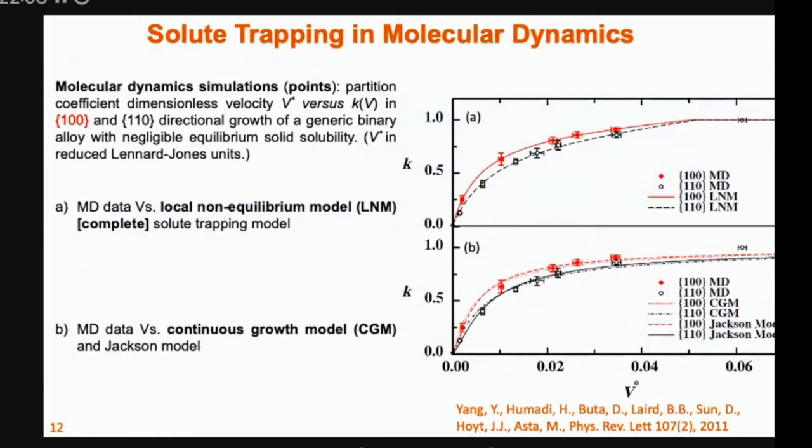The curves on the right, the data on the right is all from MD simulations done by a former student of mine, and Jeff Hoyt, who was at that time at Sandia and then came to McMaster. And the solid curves represent different theories going through the data. So what MD seems to indicate in K here, the y-axis represents again the ratio of solid to liquid concentration as a function of the x-axis, how fast the interface is moving.